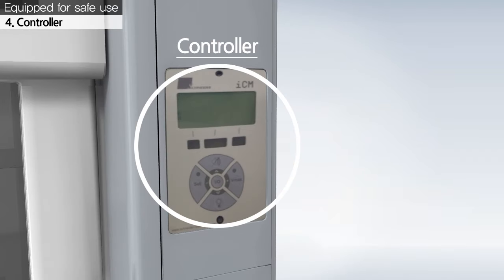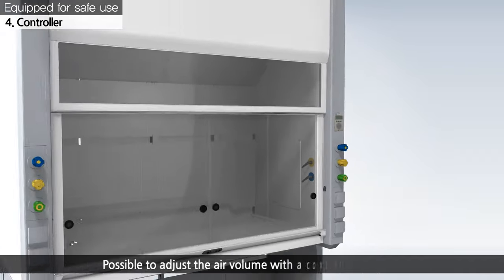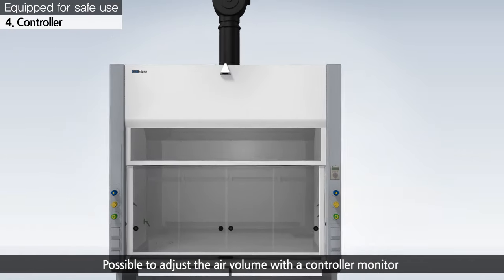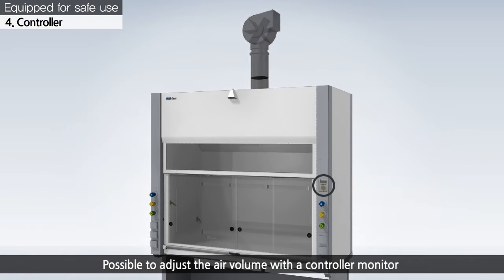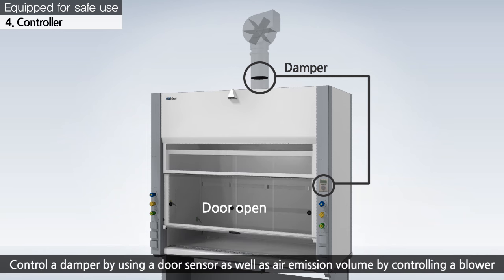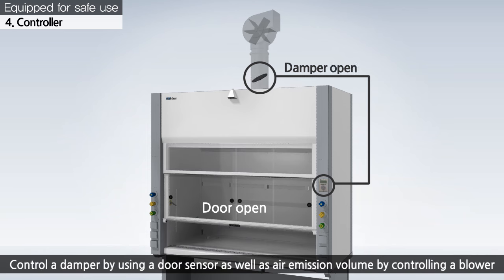The CHC Lab fume hood can control the air volume through a controller with a VAV system. It can control a damper by using a door sensor, an air volume sensor, and air discharge volume by controlling a blower.